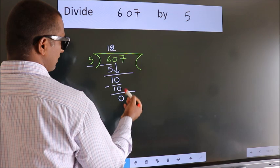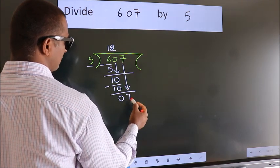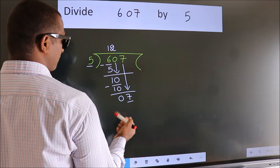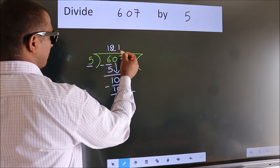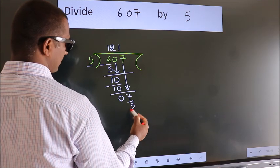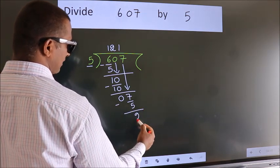After this, bring down the beside number. So 7 down. So 7. A number close to 7 in 5 table is 5 ones, 5. Now we subtract. We get 2.